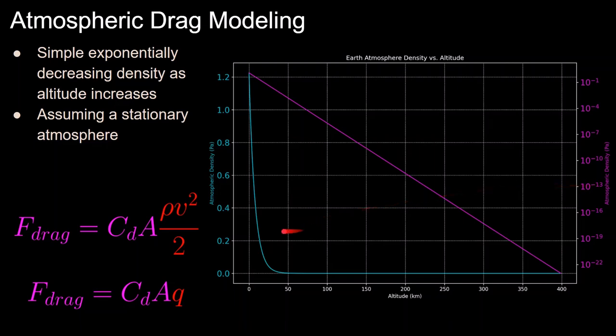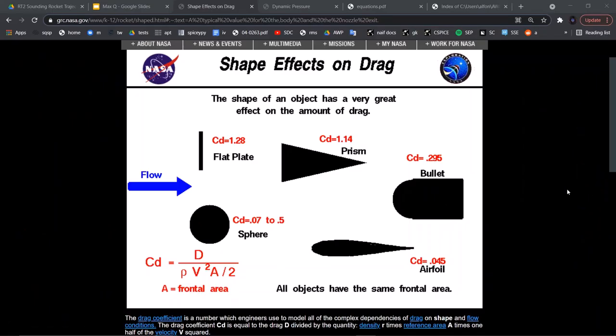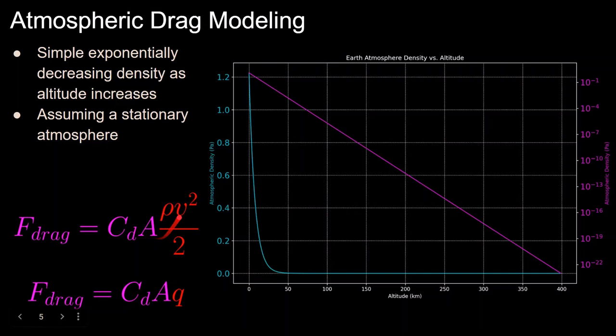Once we have atmospheric density, we also need the coefficient of drag, where here are some examples of different coefficients of drag for different shapes. So for rockets, maybe you could use something around 0.2 to 0.7. And finally, for frontal area, you can plug in any value of a rocket that you see online, I'm sure you can look that up.